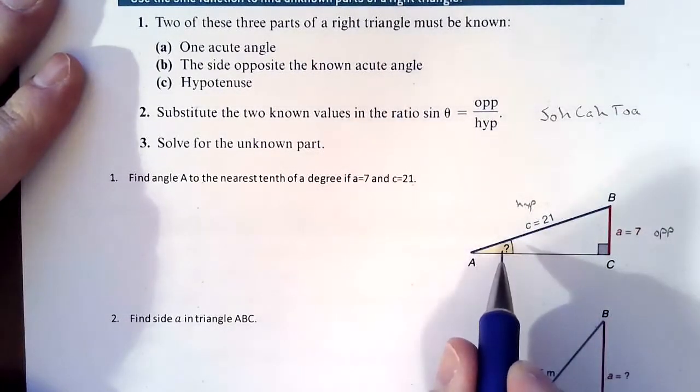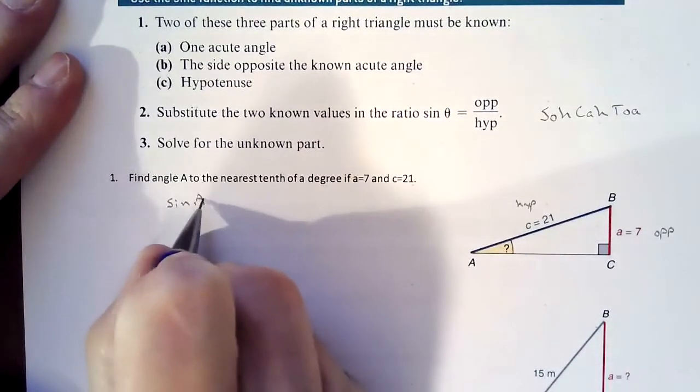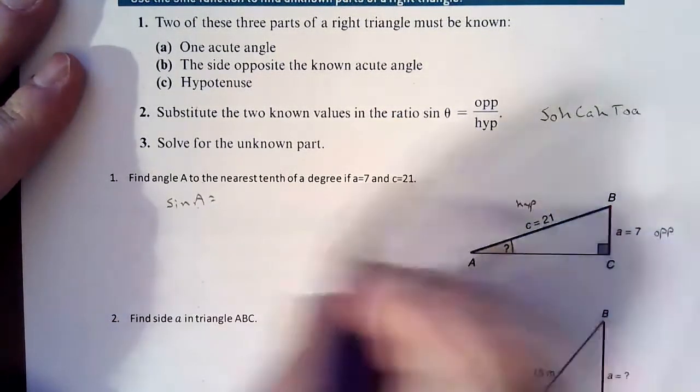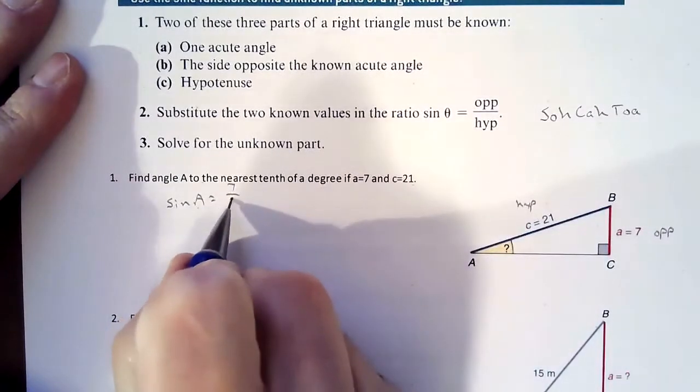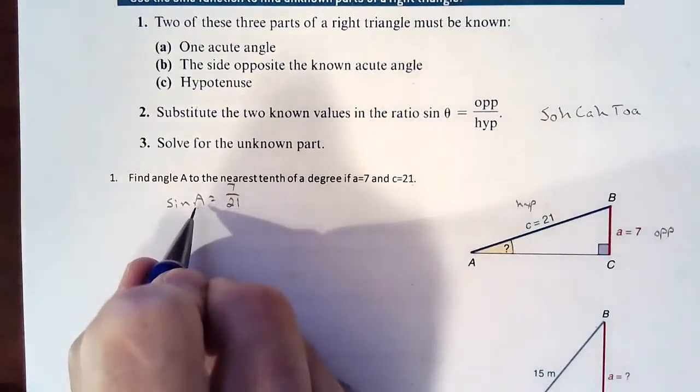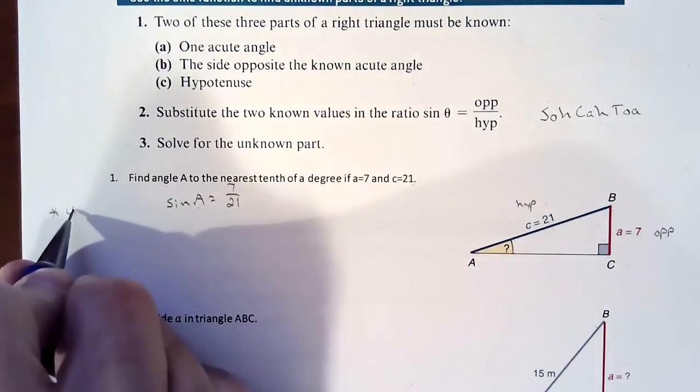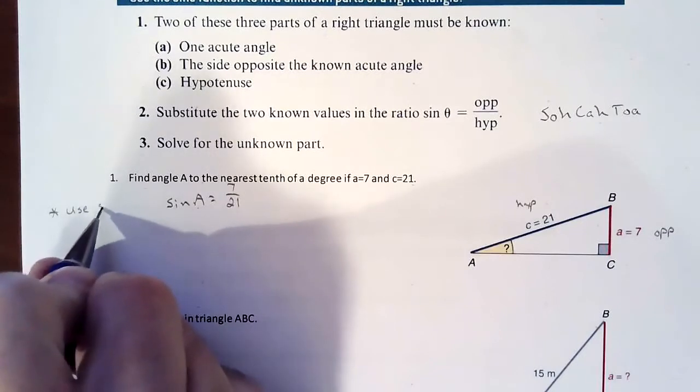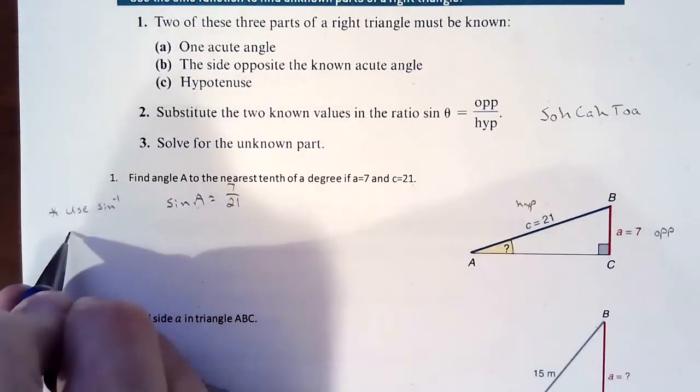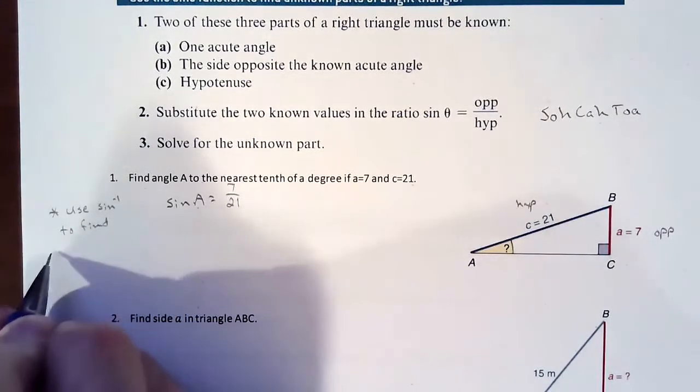So sine of angle A, which we don't know, would equal opposite over hypotenuse, seven over 21. So if we are going to try and figure out what an angle measurement is, we are going to use the inverse sine on our calculator to find a missing angle.